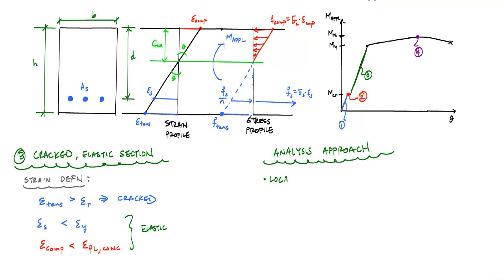To locate the neutral axis depth CNA, you can use the transformed area method where you convert the steel to an equivalent area of concrete, then complete your analysis by finding the centroid and moment of inertia and applying the flexure formula.